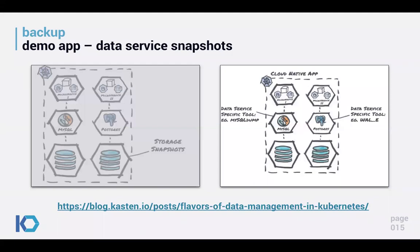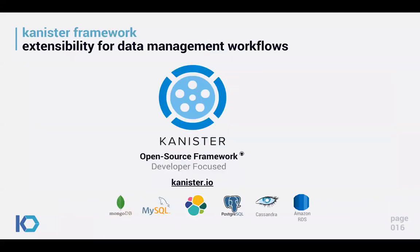While that export is running, let's go back to slides. We just demonstrated using storage snapshots to capture data. But what if you want to use a data-service-specific tool — like mysqldump for MySQL? Or if you have the third pattern where data is external, you might use an API to extract from an external service. For this we'll use Helm to deploy MySQL with a Kanister blueprint that describes how to capture the data.